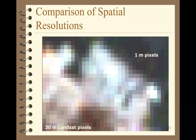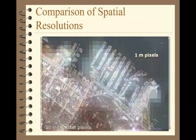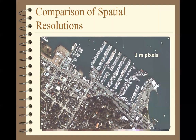Here's a comparison of 30-meter Landsat pixels versus 1-meter pixels. You can see a lot of detail at 1 meter. Depending on whether you want a big view of a large area — like the whole state of Montana or the eastern United States — versus a small area for detailed analysis, that dictates the kind of spatial resolution you need.